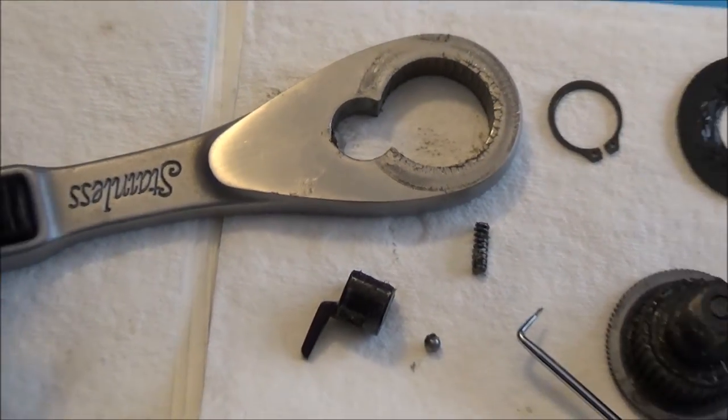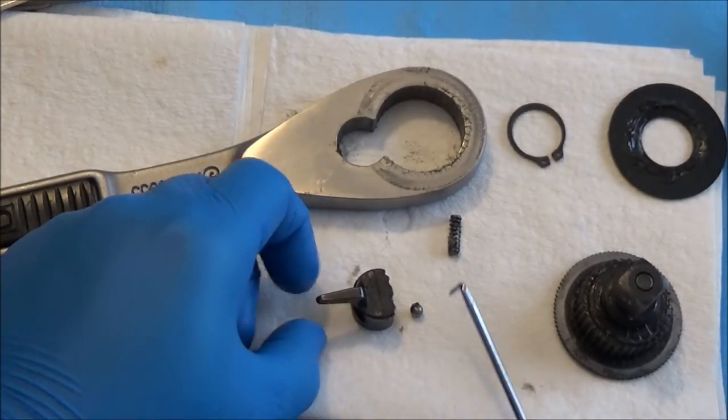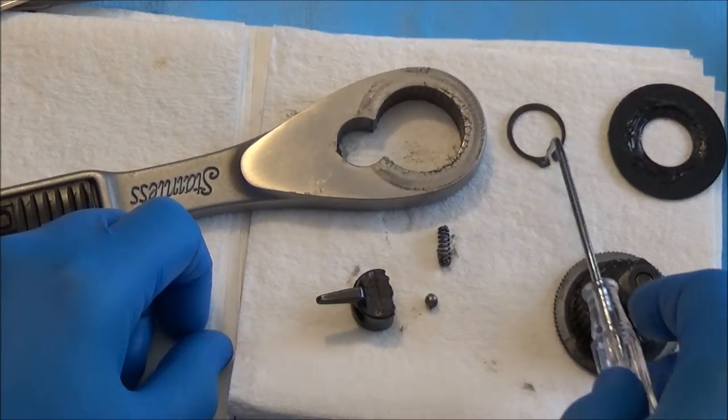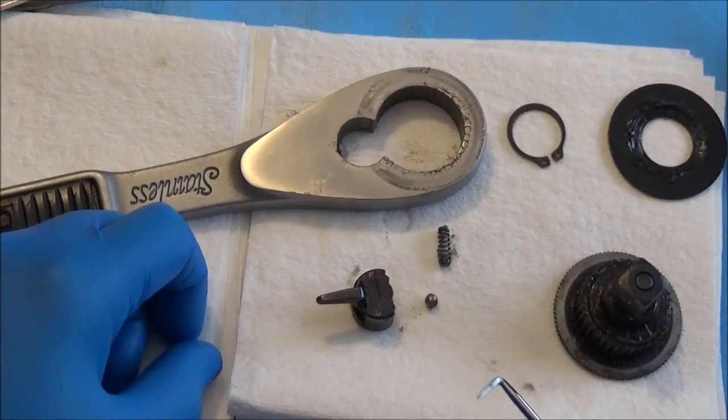So let's do an inventory. So we've got pawl slash selector, ball and spring. We've got snap ring, retention plate or sandwich plate and gear.